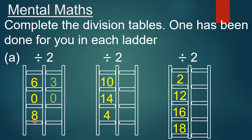Now we have to divide 8 by 2. 8 divided by 2 equals 4. Write 4 here. Here also in this ladder, we have to divide these numbers by 2. First number is 10. We have to divide 10 by 2. 10 divided by 2 equals 5. Write 5 here. Next number is 14. 14 divided by 2 equals 7. We will write 7 here.